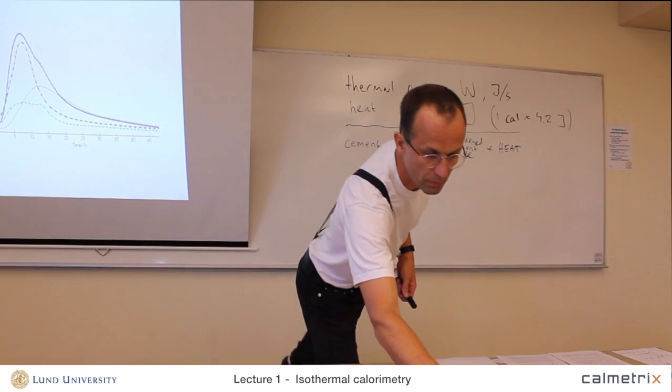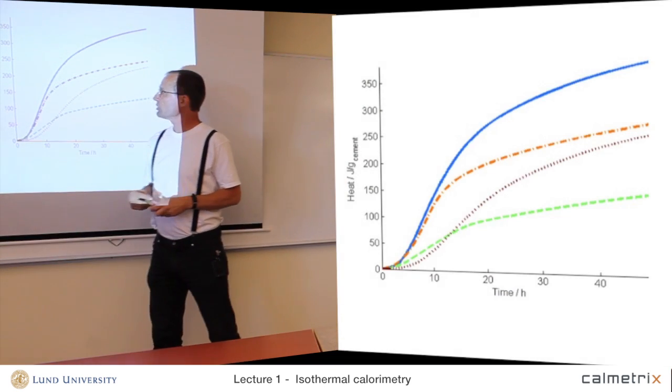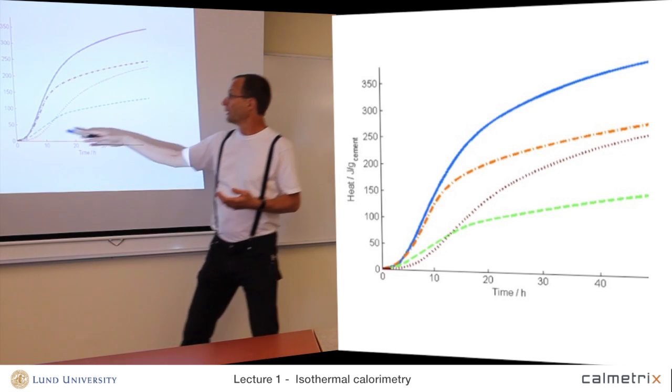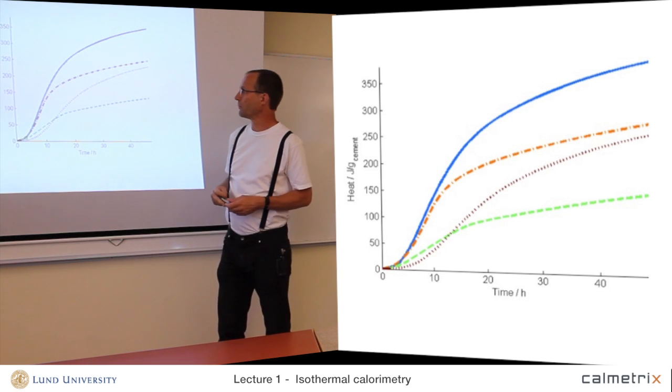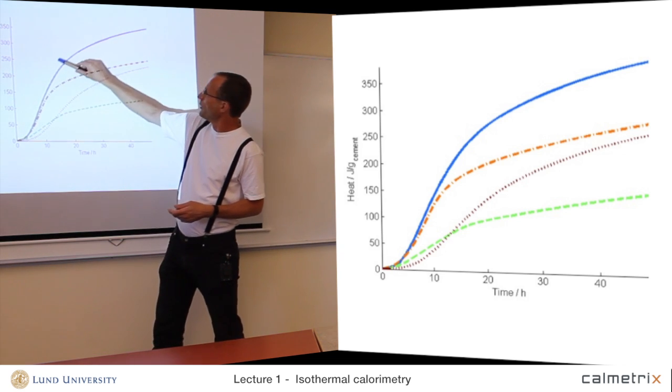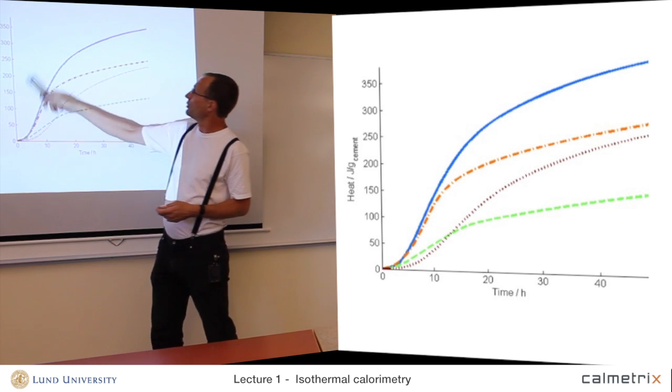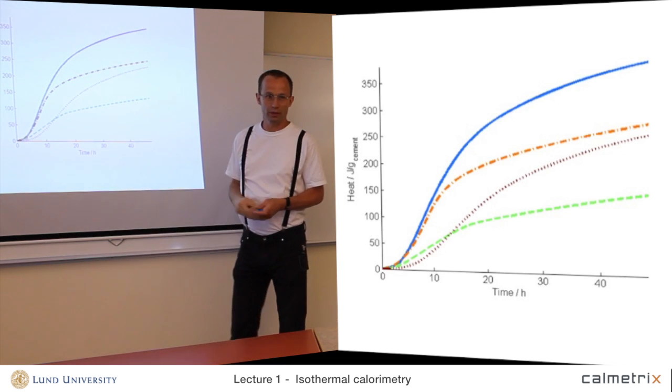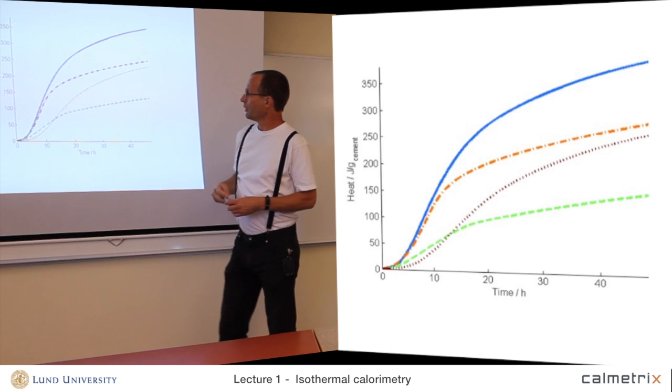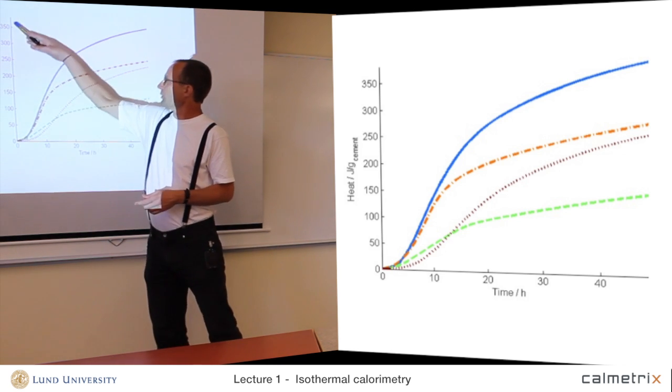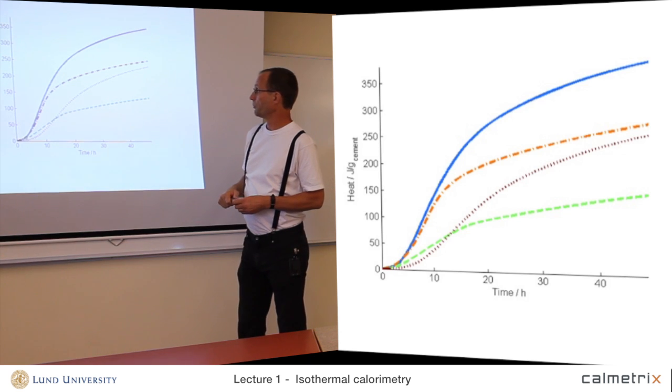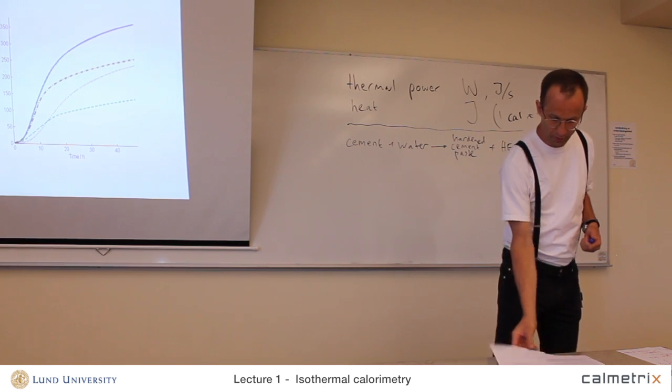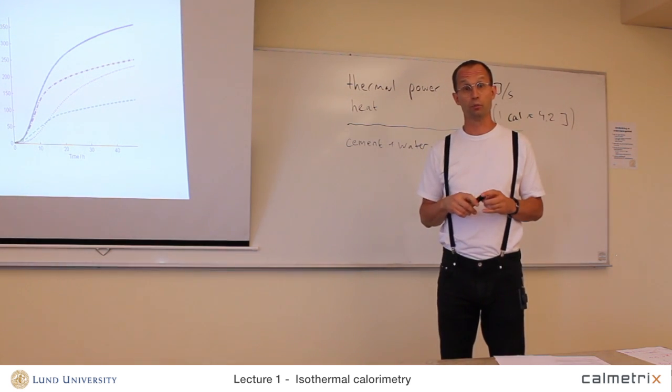When we integrate, we look at how much heat has been produced, and that is proportional to how far the reaction has proceeded. So we're looking at the extent of reaction or degree of hydration in the case of cement. The higher up we come here, the more it has reacted. Actually these curves, the ordinary Portland cement curve, will continue and level off at 400-450 joules per gram when everything has reacted. So this scale here is an amount reacted or extent reacted scale.